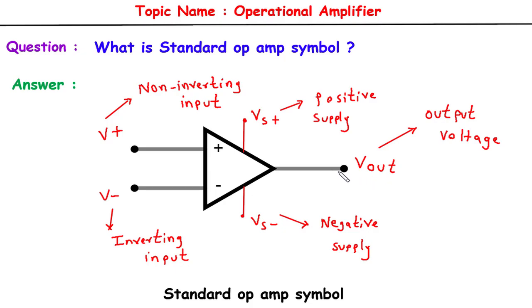This terminal signifies the amplified or processed signal that results from the internal amplification and feedback mechanisms within the op amp. It's crucial to note that the output voltage is determined by the voltage difference between the two input terminals rather than the supply voltages.